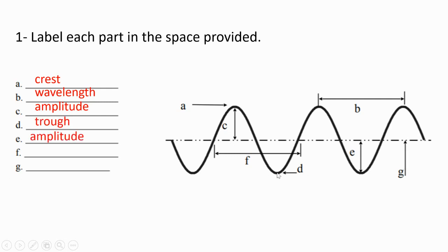D is a trough. E is also amplitude. F is another way to measure the wavelength between two pulses. And G is the resting or equilibrium line.